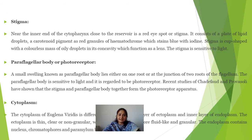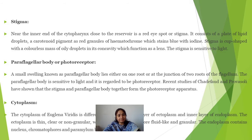Near the inner end of the cytopharynx, close to the reservoir, there is a red spot called the stigma. This is a lipid droplet that is red in color because a pigment called hematochrome is present. It stains blue with iodine. The stigma is sensitive to light and plays the main role in phototaxis. The paraflagellar body is a small swelling sensitive to light and is regarded as a photoreceptor.